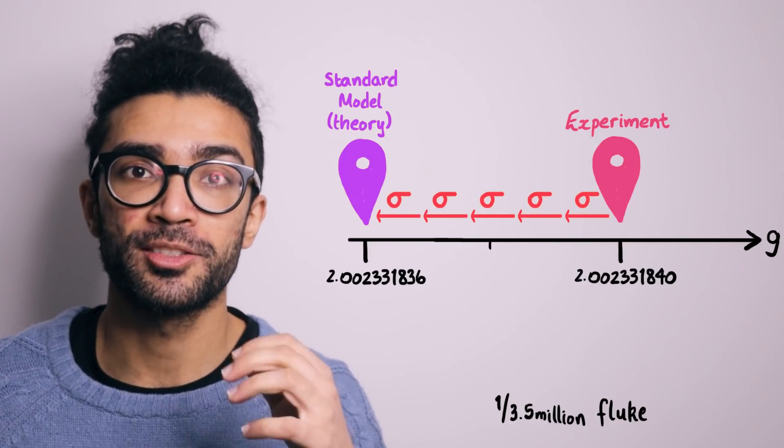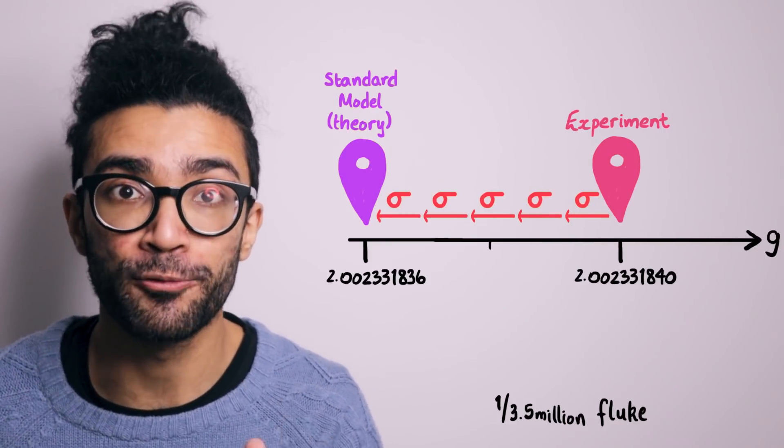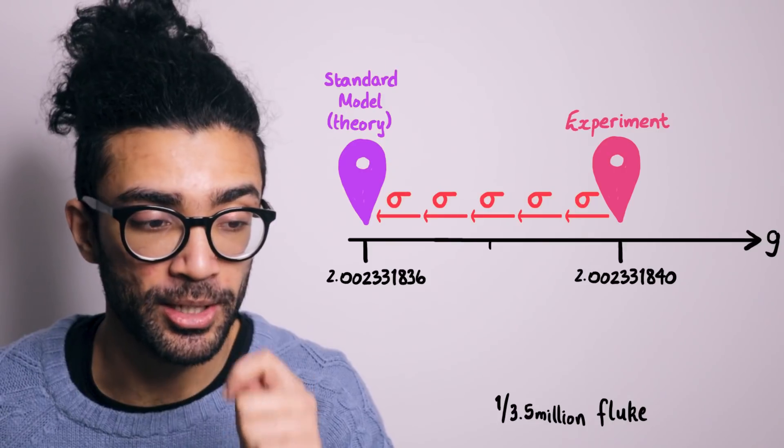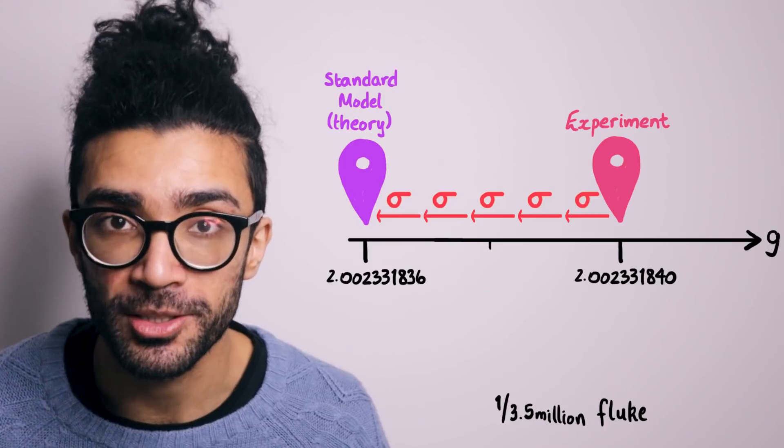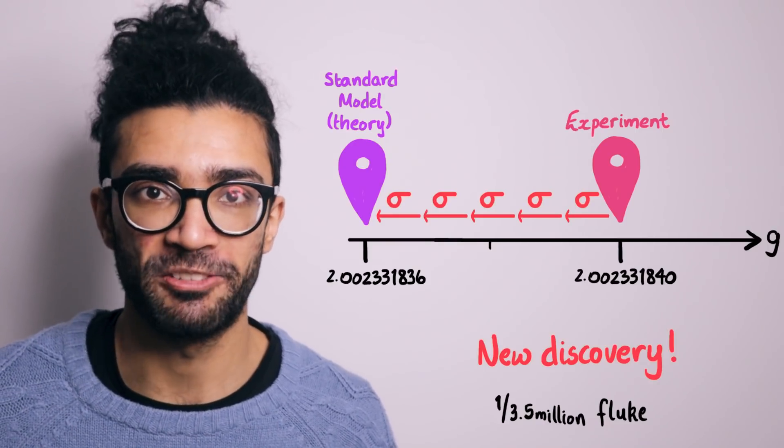This indicates just a one in 3.5 million chance that the experimental value was just a fluke or a coincidence. In other words, when scientists are so sure that the values are different enough, that the experiment could only be a fluke in one in three and a half million possible experiments, then that's when they say that this is a new scientific discovery.